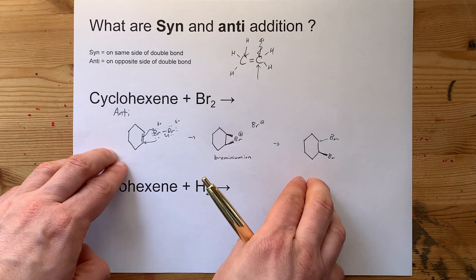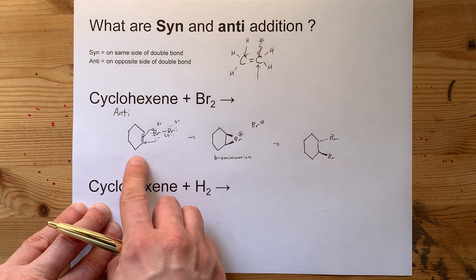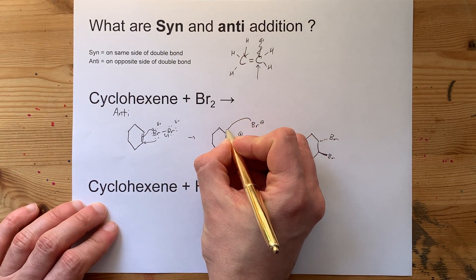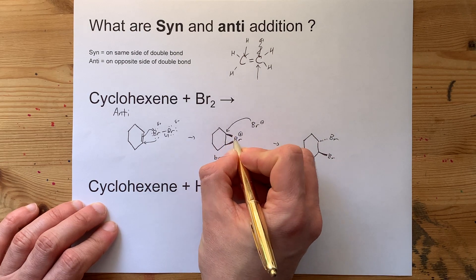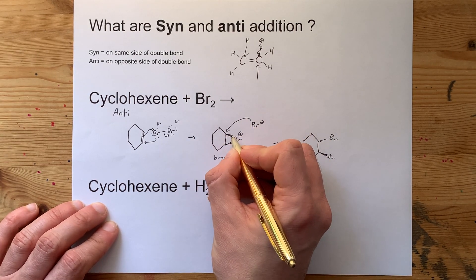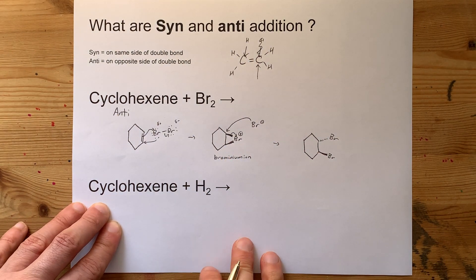The reason is the configuration of the intermediate. So you have to understand the mechanism to show why it happens. I'll just emphasize what's happening here. That bromide attacks that carbon, and the electrons from that bond go to the positive bromine atom.